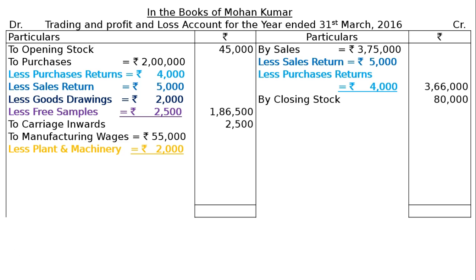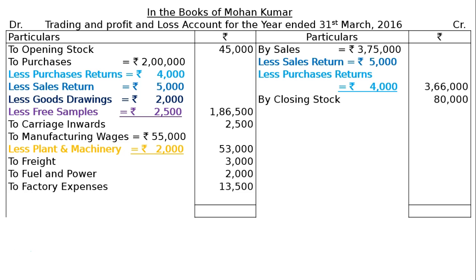Per adjustment C, wages paid for installation of plant and machinery amounting to rupees 2,000 were included in wages account. So manufacturing wages rupees 55,000 less plant and machinery installation rupees 2,000 — these installation expenses are deducted from manufacturing wages, shown in the final column as rupees 53,000. The wages of rupees 2,000 used for installation will be added to plant and machinery before depreciation. Next: freight rupees 3,000, fuel and power rupees 2,000, factory expenses rupees 13,500.